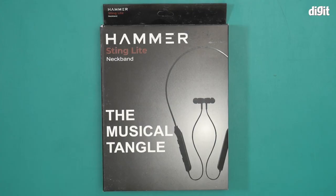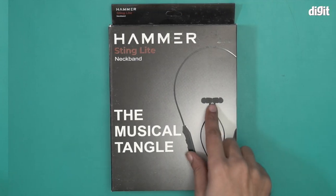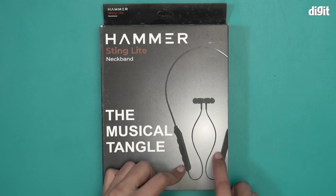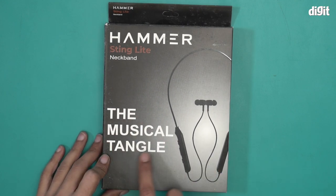Hello and welcome to the unboxing of the Hammer Sting Light neckband. This is a neckband-style earphone. As you can see from the image, this comes with magnetic heads. This is the neckband in question. It also has two modules; one will have the controls. It has 'The Musical Tangle' written right over here. Let's quickly take a look at the box.